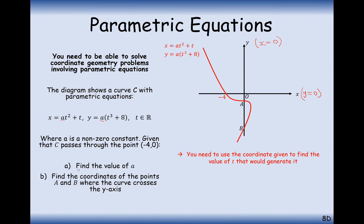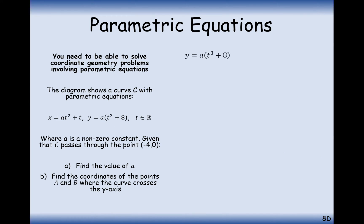First we're going to work out the value of small 'a'. We need to use the given coordinate minus 4, 0 to help us. We're going to take the y equation, set it equal to zero, and work out what the t value is at that point.